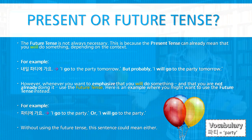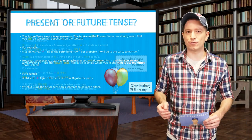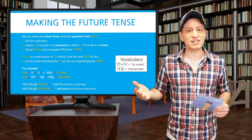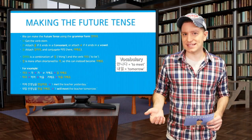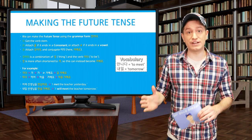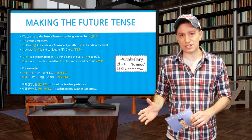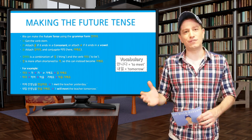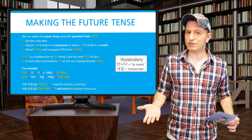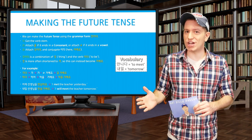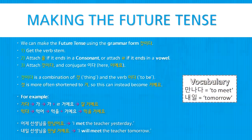We can make the future tense by using the grammar form 거시다. To do it, just get a verb stem. Then attach 을 if it ends in a consonant, or attach 리을 if it ends in a vowel. And finally, attach 거시다 and conjugate 이다. This will become 이에요.